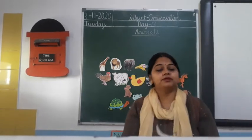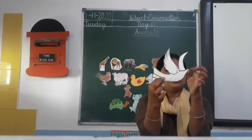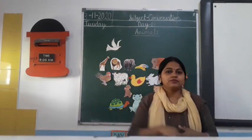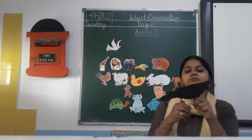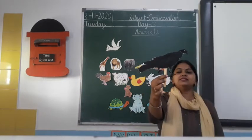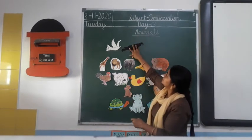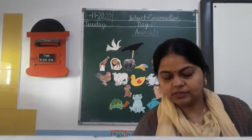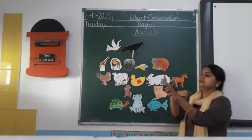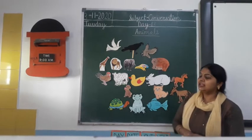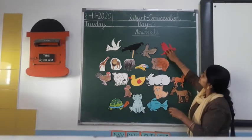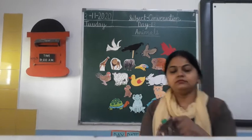Now I am going to show you some pictures of birds. What is this? This is a dove. What is the color of this bird? White. Which bird is this? Duck. And which bird is this? This is a crow. Now, which bird is this? Eagle. And sparrow. And vulture.